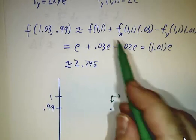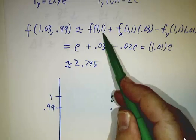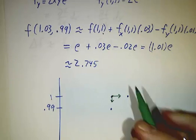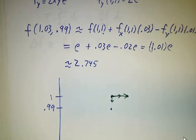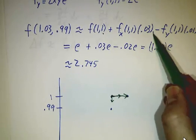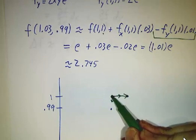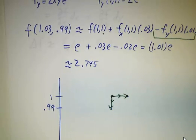So you start off with a value at (1,1), and you add a good approximation to how much it would change if you went from here to here. And then you add how much it changes as you go from here to here.